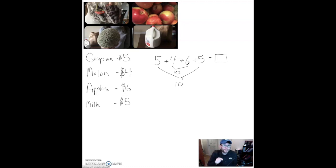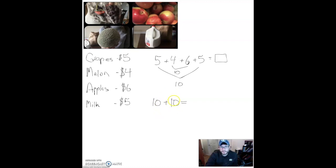What's great about this is now I have two new addends. My five and five made ten, and the four and six also made ten. This is pretty comfortable for me — I have two addends, a ten and another ten. And I remember counting by tens: ten, twenty.